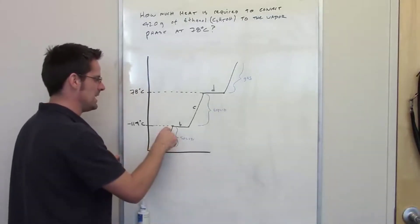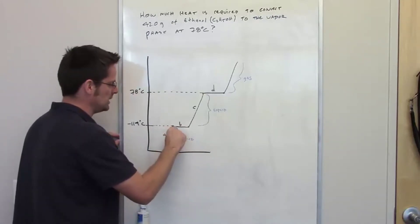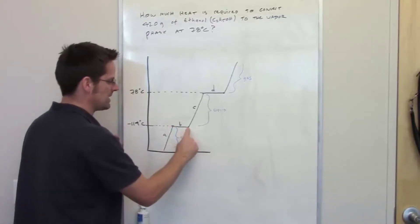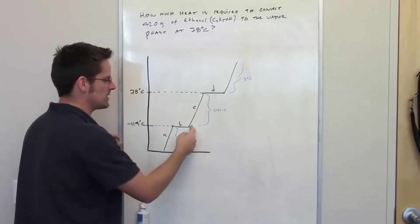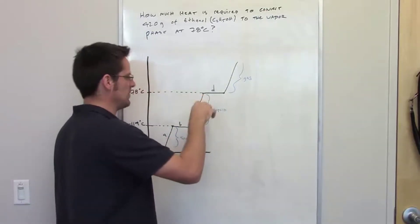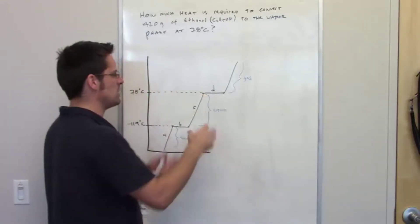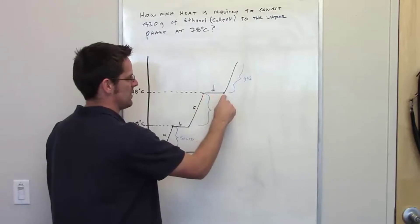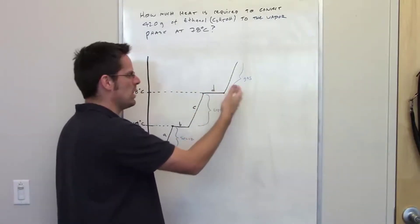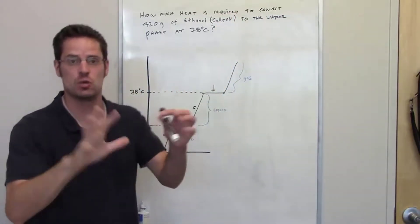As soon as it hits negative 114 and you start cranking more heat into it, the temperature does not change until all of that ethanol has been converted from a solid to a liquid. At that point it's now liquid. You continue increasing the temperature; at some point you'll get to 78 degrees Celsius, and then any additional heat will not change the temperature but will convert that liquid into a gas. It will remain a gas at one atmospheric pressure for any temperature above 78 degrees Celsius.